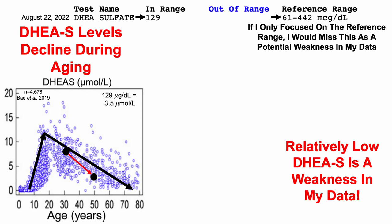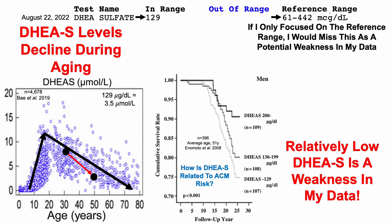If you look at the two lines — the red line and the black line — they look somewhat parallel. In other words, it looks like I've experienced an age-related decline for DHEA sulfate, at least based on these three blood tests. So then, how is DHEA sulfate related to all-cause mortality risk, or ACM risk?